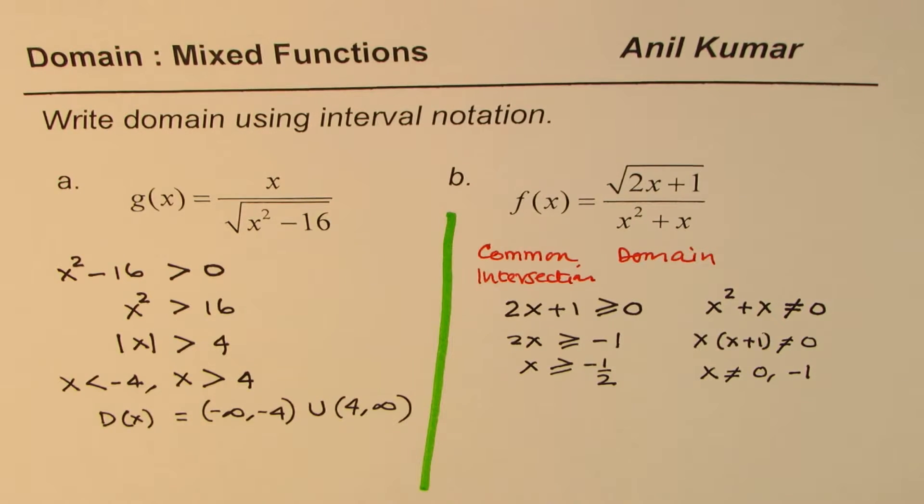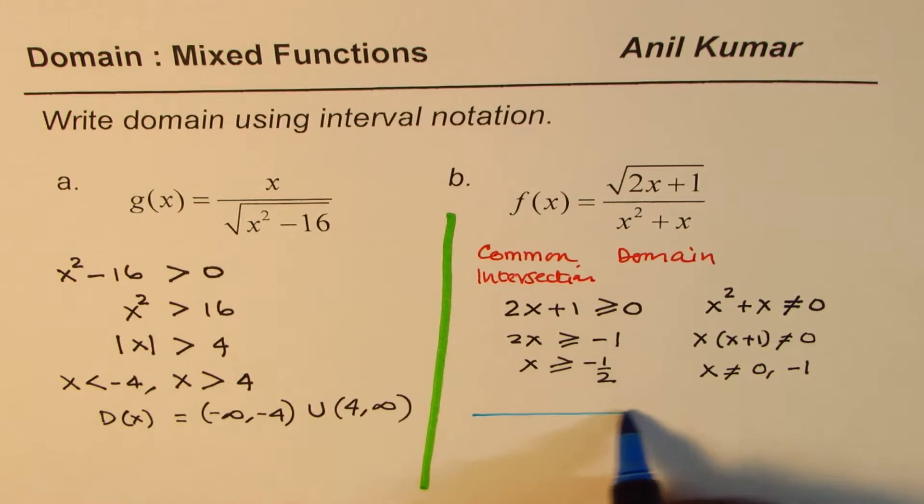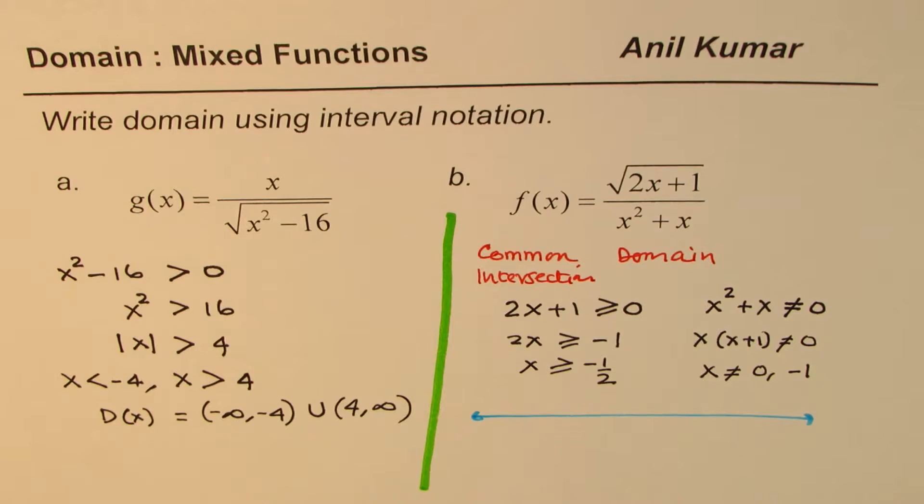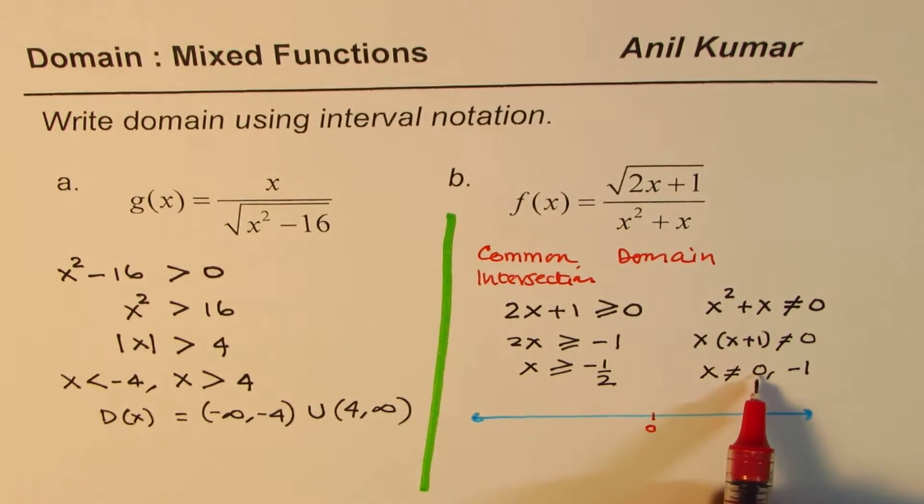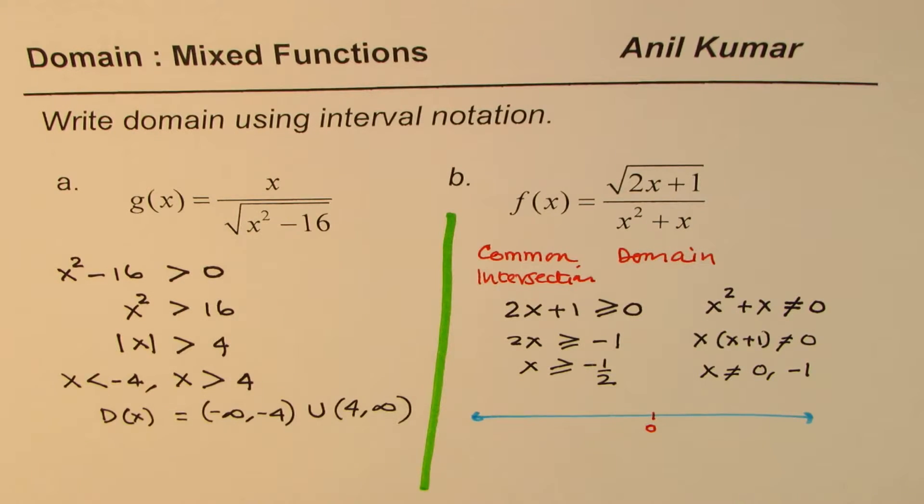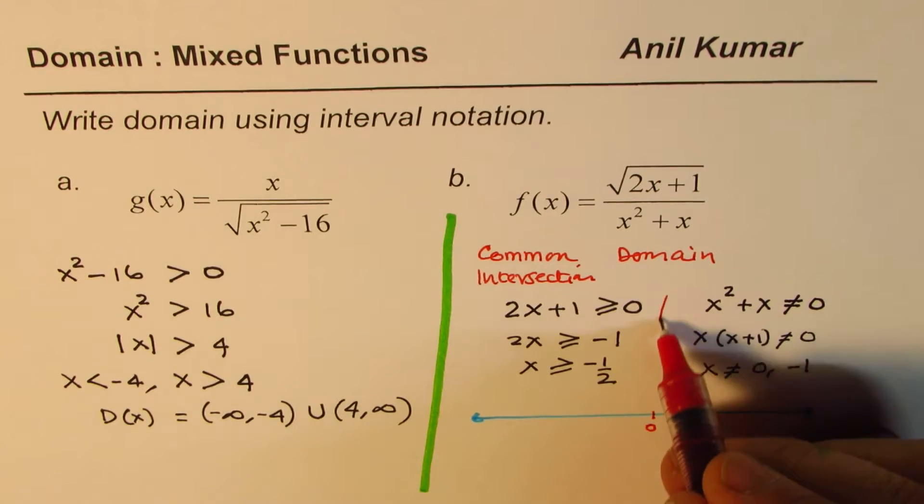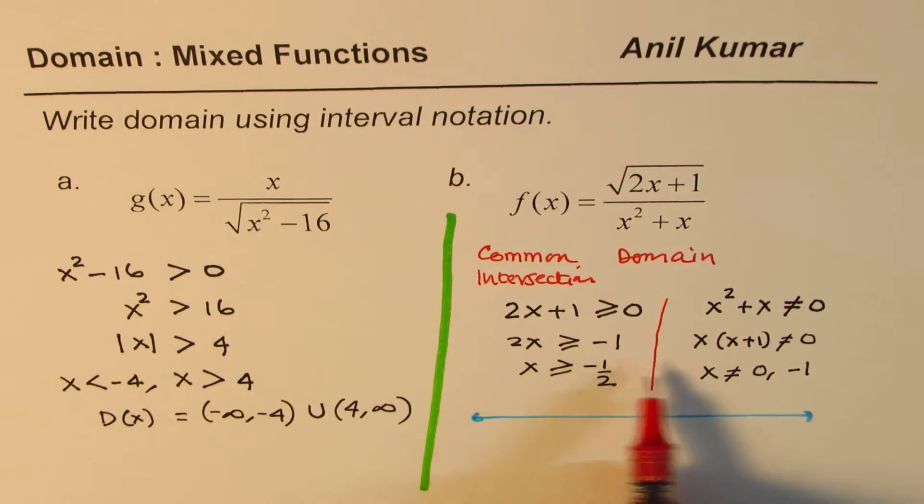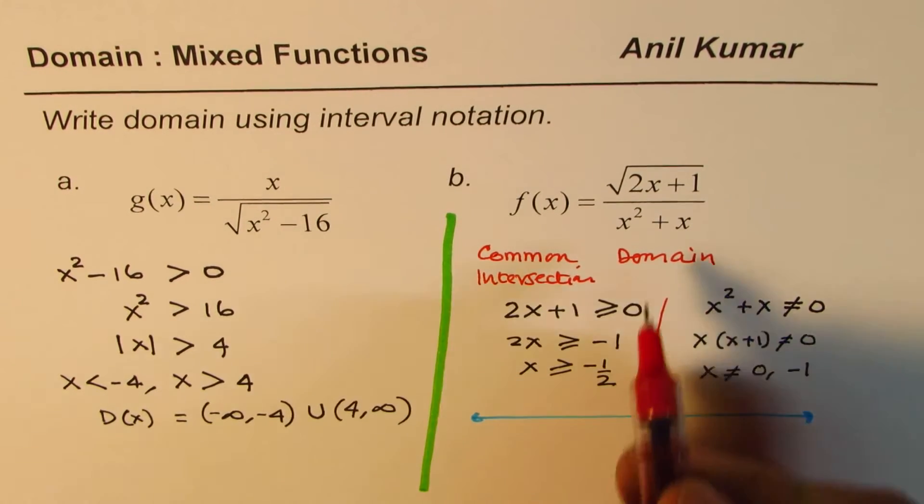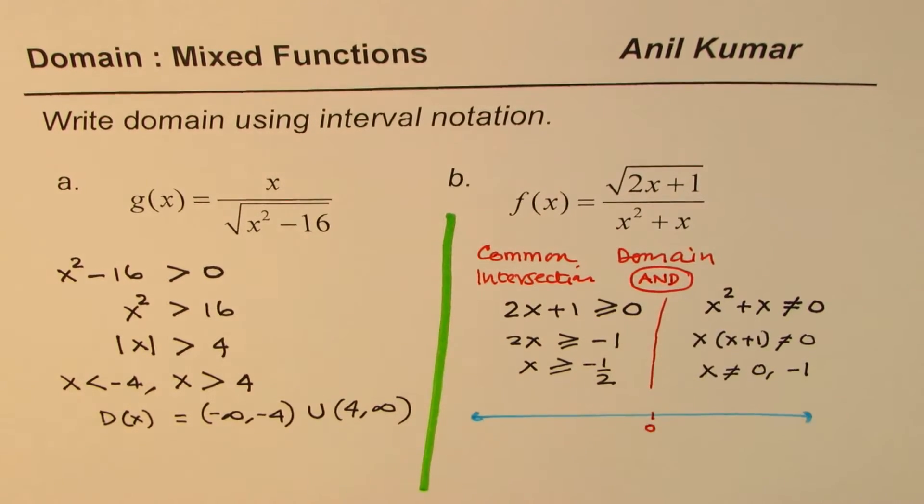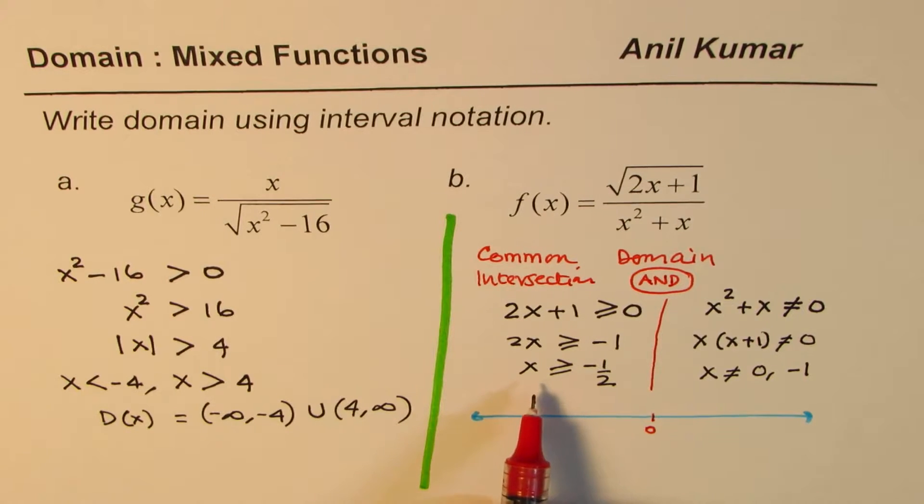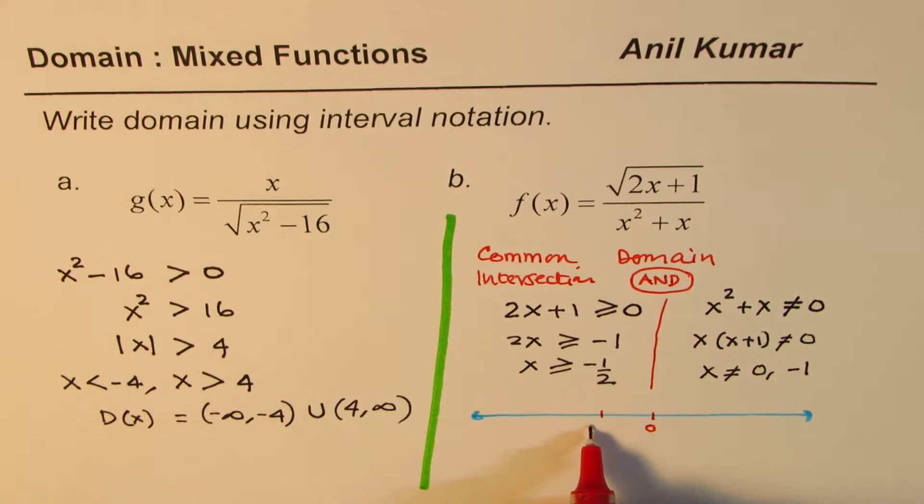Let's consider a number line here. On a number line, if this is our 0, then we have one restriction. Let me divide this into two portions here and we'll see what is the combination of this. We are looking for the and condition, intersection means and condition. This one says that x is greater than or equal to minus half, let's say this is minus half for us.